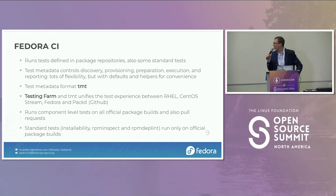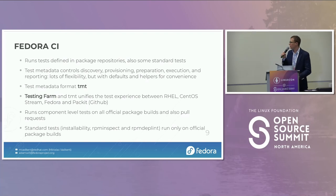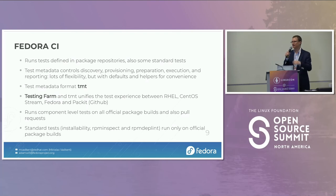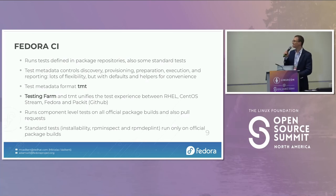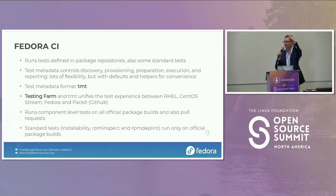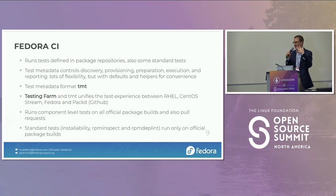Fedora CI also inherited from AutoQA the ability to run a small amount of generic tests on all package builds — things like RPM sanity tests: are the dependencies okay, are there any obvious errors in the package? It runs those on all builds and files reports. It also does this for any pull requests filed to a Fedora package. Not all packages use pull requests — some are maintained by one person who just pushes directly — but packages that are collaboratively maintained get free automated testing with all pull requests.